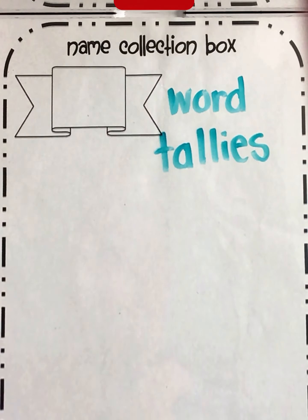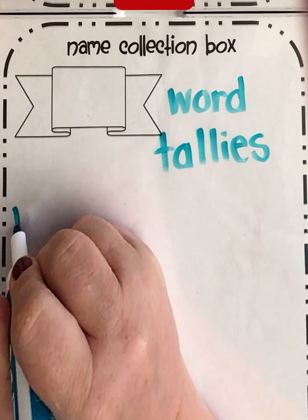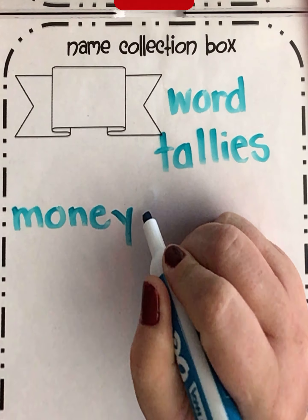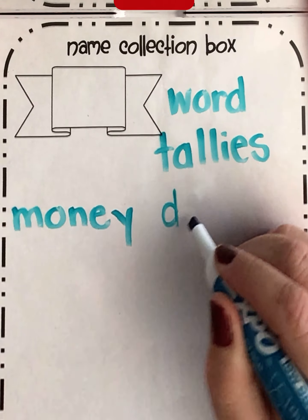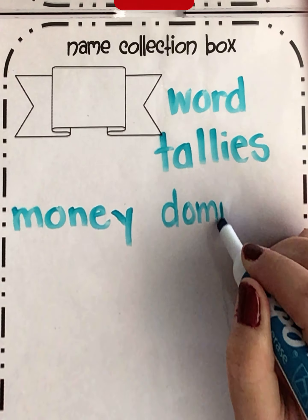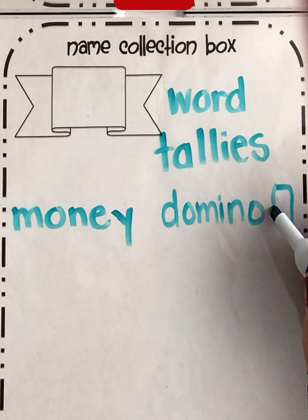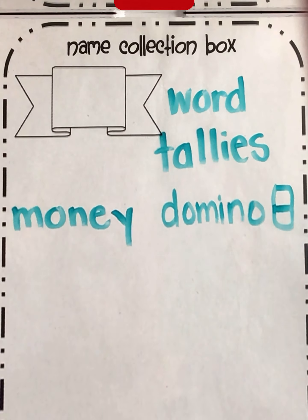You remember how to do tallies. Another way that we can represent a number is by using money — by using dimes, nickels, pennies, quarters. We can also show it with a domino. You know what dominoes look like — they're those little rectangles with a line in between, and then there's dots or pips on one side and dots or pips on the other side.